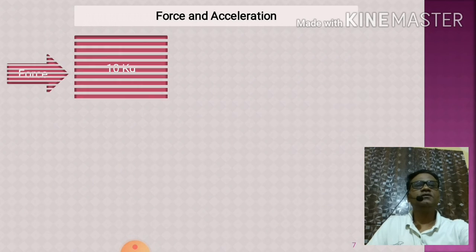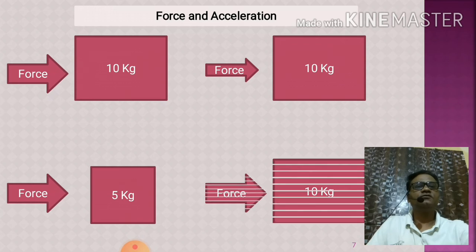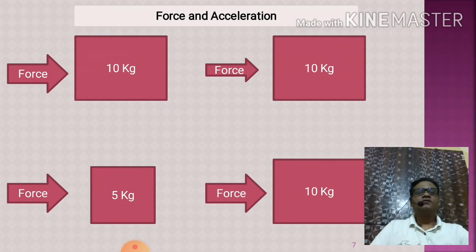Now see this one image shown here. In first case the mass of the block is 10 kg, in second case the mass of the block is also 10 kg, means the mass is same in both cases. Now force applied on first block is greater, force applied on second block is less. So in first case force is greater, acceleration will be greater. In second case force is less, acceleration will be less.